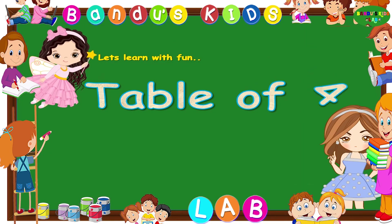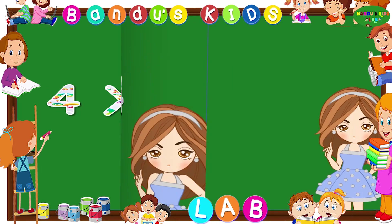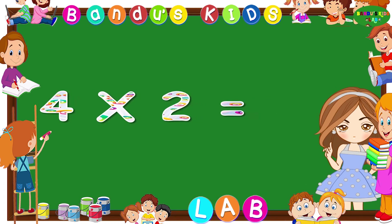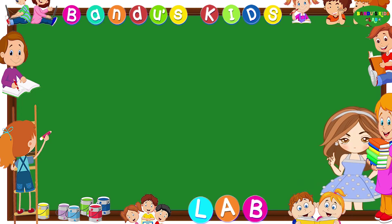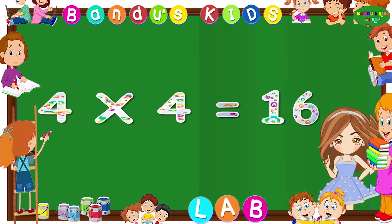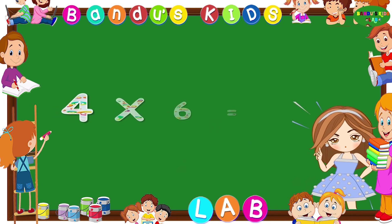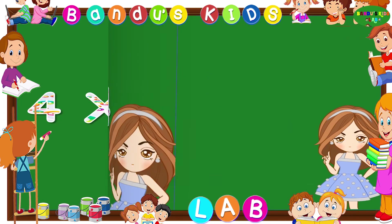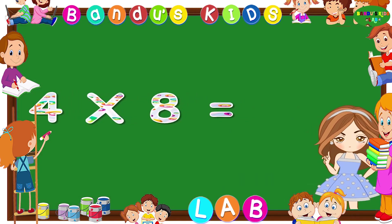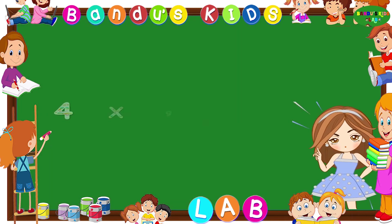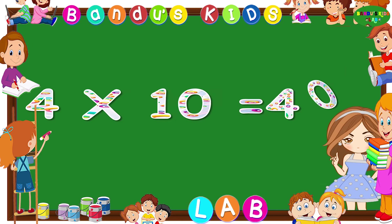Table of four. Four ones are four. Four twos are eight. Four threes are twelve. Four fours are sixteen. Four fives are twenty. Four sixes are twenty-four. Four sevens are twenty-eight. Four eights are thirty-two. Four nines are thirty-six. Four tens are forty.